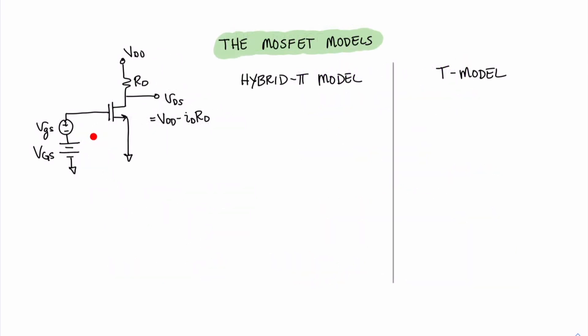Let's develop the small signal equivalent models for the MOSFET-based transistor amplifier. We recognize that VDS equals VDD minus ID·RD, and ID is our dependent variable — what we get from signal VGS coming in. It has a DC portion and a small signal portion, and if our small signal condition is met, the response is linear. This equation tells us about the dependent source we need for our model: a voltage-controlled current source. Therefore, in both our hybrid pi and T models, the dependent source will be a voltage-controlled current source.